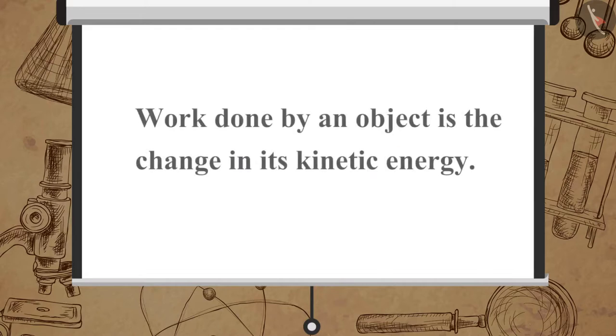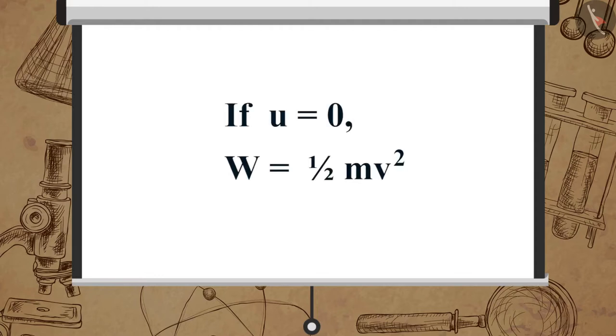We learned that the work done by an object is the change in its kinetic energy. That is, if U is equal to 0, W is equal to one-half M V square.